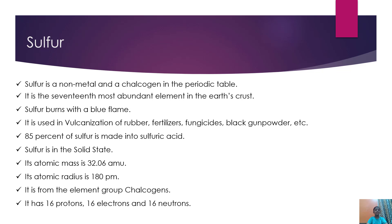Sulfur is a non-metal and a chalcogen in the periodic table. It is the 17th most abundant element in the earth's crust. Sulfur burns with a blue flame, and it is used in vulcanization of rubber,